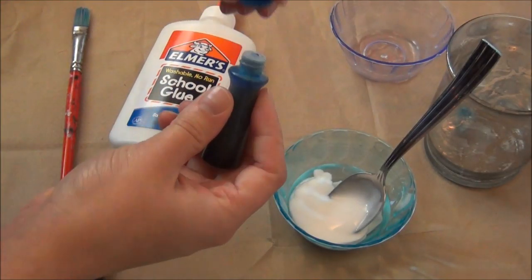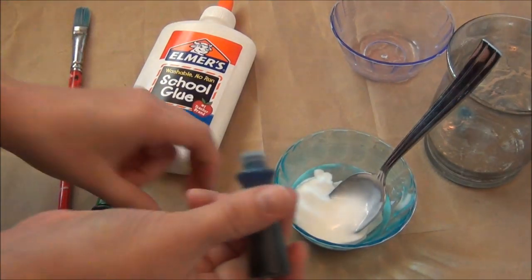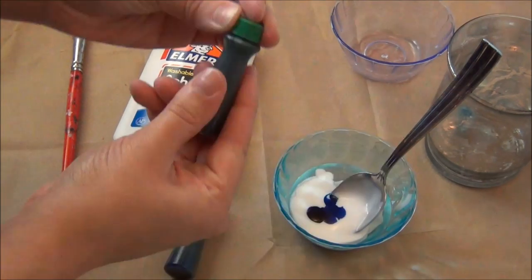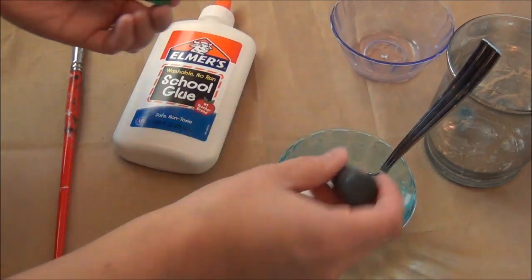Next I'm going to go for a little bit of a turquoise finish, so I'm going to do four drops of blue and two drops of green food coloring.